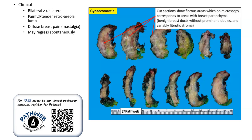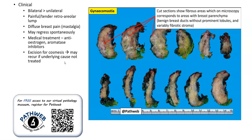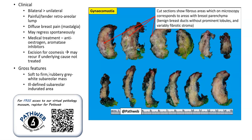Clinically, this is more often bilateral; however, it can sometimes be unilateral, and there is usually associated pain, so there may be a retroareolar tender or painful lump, and sometimes the pain is more diffuse, and this is known as mastalgia. Gynecomastia may occasionally regress spontaneously. It can be treated with medical treatment, for example anti-oestrogen medication, and sometimes in recalcitrant cases excision is indicated. However, if the underlying cause is not treated, it can recur.